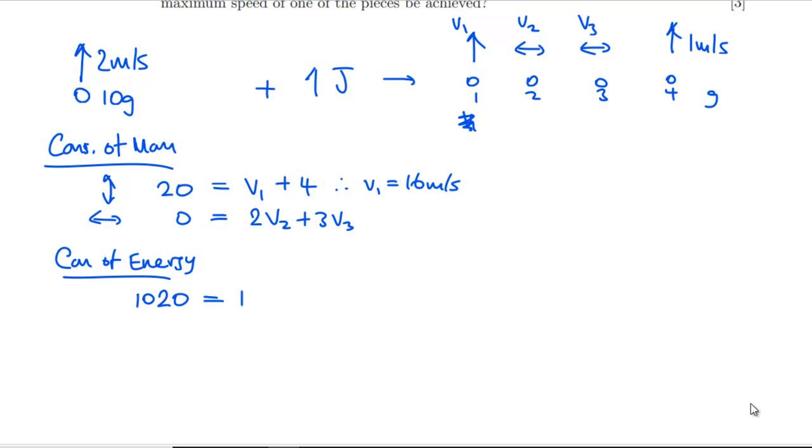Plus the thousand. So thousand and twenty has got to be equal to ½ of 16², so that would be 128. Then we've got, well, we can do the 4 one easily because that's going to be 2 times 1, so that's 2.